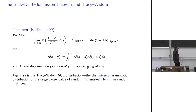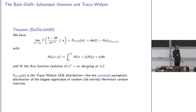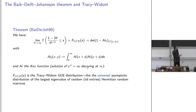This distribution had previously appeared — rather universally — as the law of the largest eigenvalue of random Hermitian matrices with i.i.d. entries. As long as the entries have four or five moments, the largest eigenvalue always satisfies this distribution after normalizing and rescaling in essentially the same way.